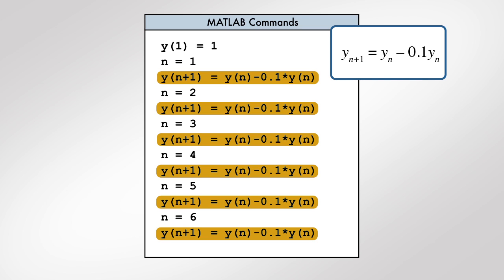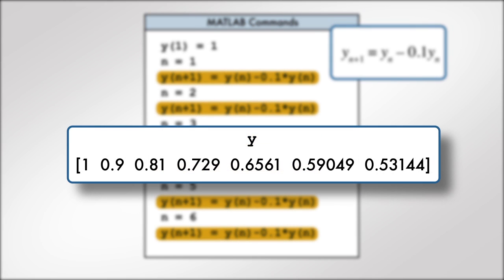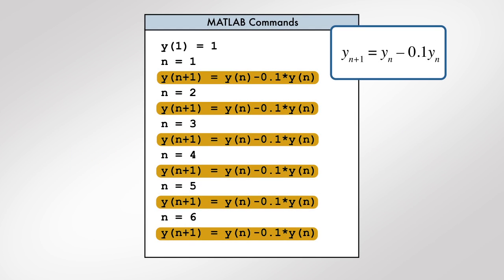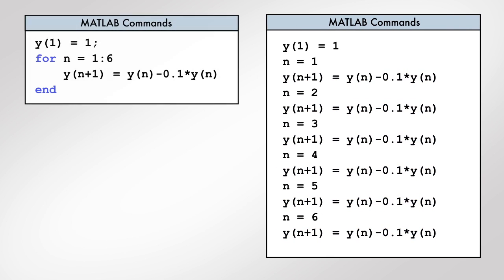The end result of these commands is a vector of seven elements. A more efficient way of achieving this result is to use a programming construct called a for loop. A for loop allows repeated execution of a particular set of commands for a fixed number of times.